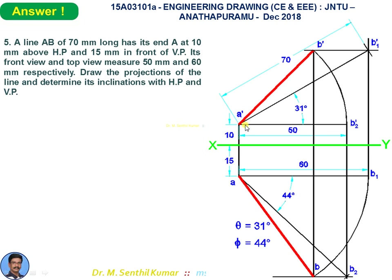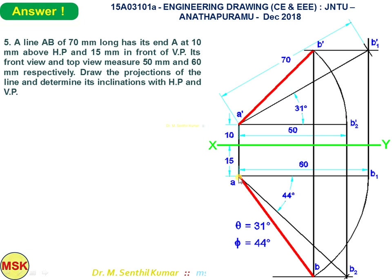In the preliminary top view set, AB2 shows the true length and true angle phi. The corresponding front view shows the front view length of 50 mm. From A' draw a horizontal line and mark B2' such that A'-B2' equals 50 mm. Through B2' draw a projector. With A as center and 70 mm true length as radius, cut an arc to get B2. Measure the angle phi — phi equals 44 degrees.